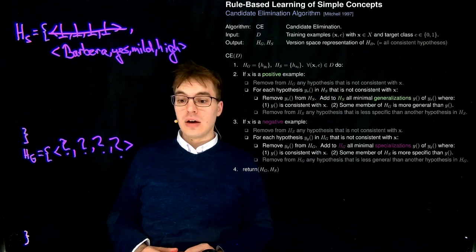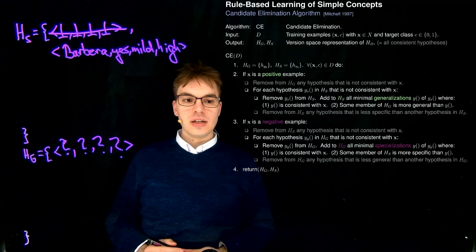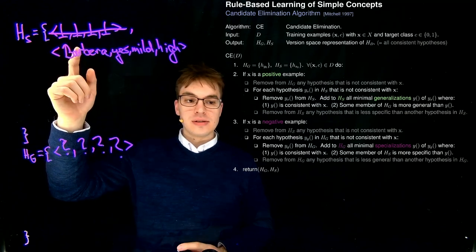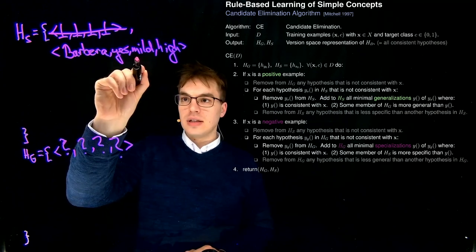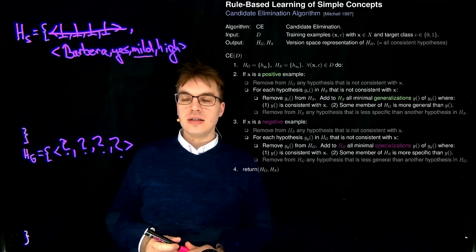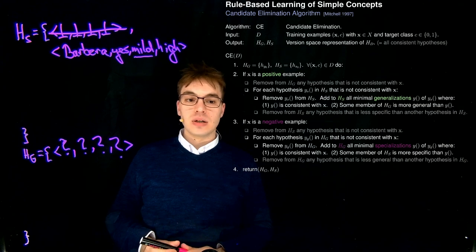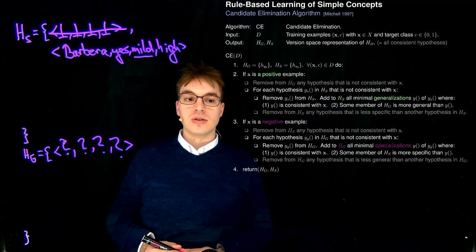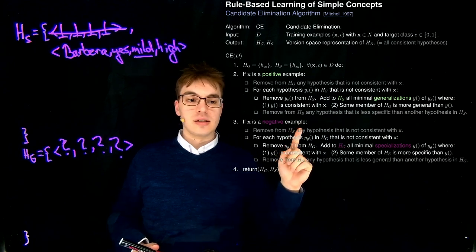Example 2: we now have a non-award-winning example, which means we consider this case. First, we remove from HS any hypothesis that is not consistent with X. The example has strong acidity, so it doesn't match, but since we have a negative example, this is actually what consistency requires — the hypothesis doesn't match the negative example, so we have consistency. We cannot remove anything from HS in this step.